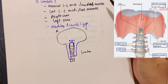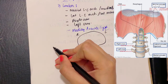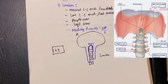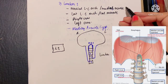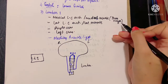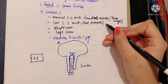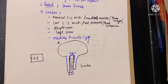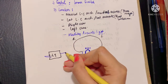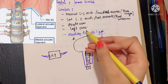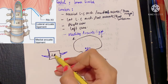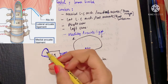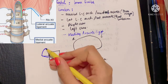The medial lumbocostal arch, also called the medial arcuate ligament, is a tendinous arch lying in the fascia covering the upper part of the psoas major muscle. The lateral lumbocostal arch arises from the fascia covering the upper part of the quadratus lumborum muscle. The medial arcuate ligament arises from the body of the L1 vertebra and attaches to the transverse process of L1, forming an arch.